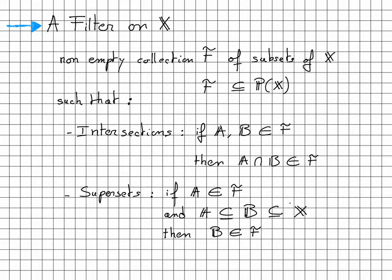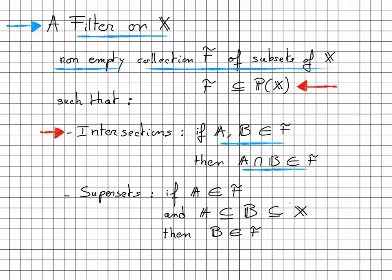Now that we know what power sets are, we can define a filter on X. It is a non-empty collection that we call F of subsets of X. In other words, it is a subset of the power set of X, such that two axioms are satisfied. First, the intersection axiom, saying that if A and B belong to F, then the intersection of A and B must belong to F. And the superset axiom, saying that if A belongs to F and A is a subset of B, then B must belong to F.